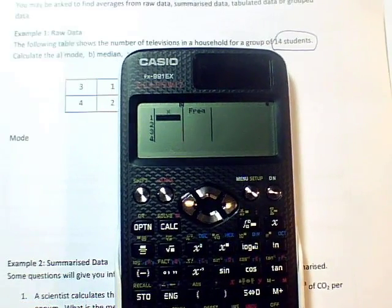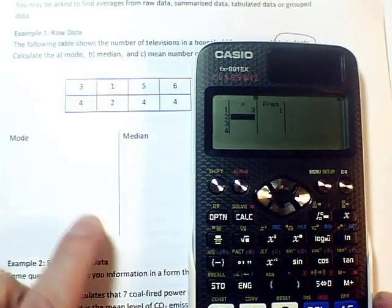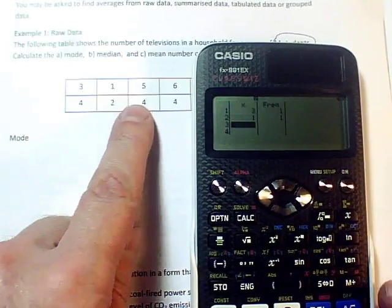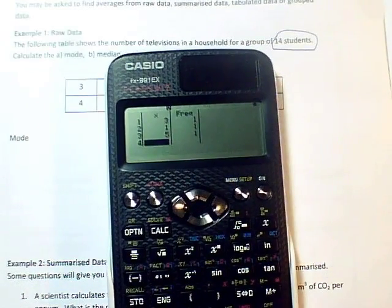So I'm going to enter each item, so I press 3, and I press equals, it gives that a frequency of 1, and I'm ready to go on to my next value, which is 1, and so on, and the next one is 5. So I'm just going to go down the list until I've got all 14 items entered.